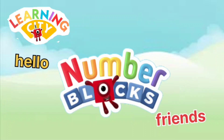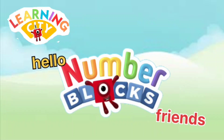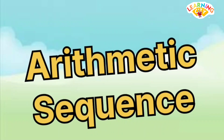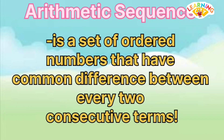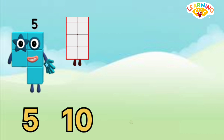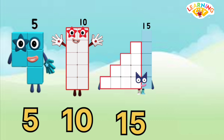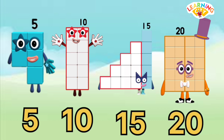Hello number blog friends, welcome to Learning City. Let's learn arithmetic sequence. An arithmetic sequence is a set of ordered numbers that have a common difference between every two consecutive terms. Find the missing number: 5, 10, 15. The right answer is 20.